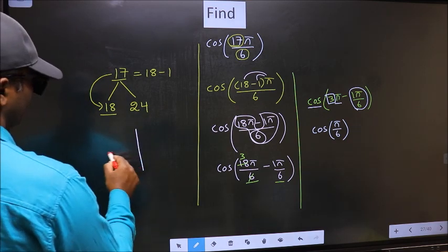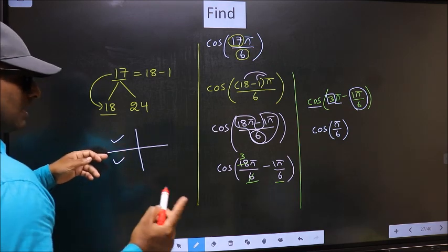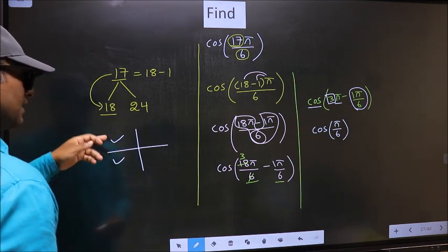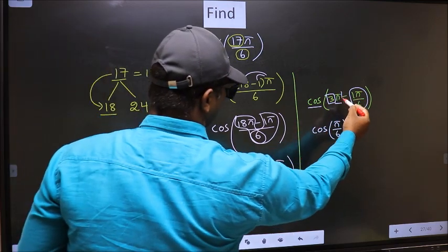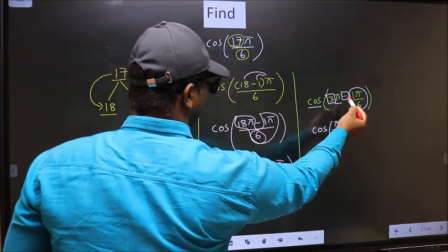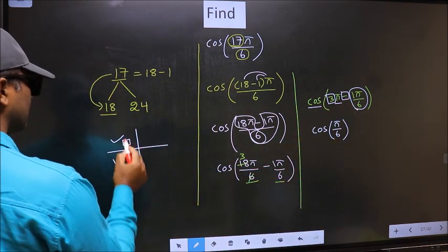either in the second quadrant or in the third quadrant. Now to check in which quadrant does it lie? We should look at this symbol. Here we have negative. That means the angle lies in the second quadrant.